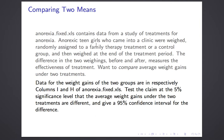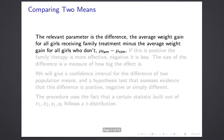So we're going to compare the average weight gain under the family therapy treatment to the average weight gain under the control treatment — no treatment. The data for the weight gains are in columns I and H of that file. We're going to use that data — two columns of numerical data — to test the claim at the 5% significance level that the average weight gains under the two treatments are different, and to give a 95% confidence interval for that difference.